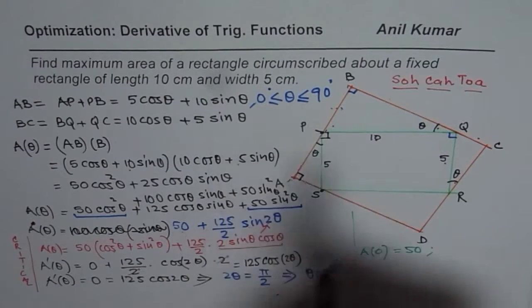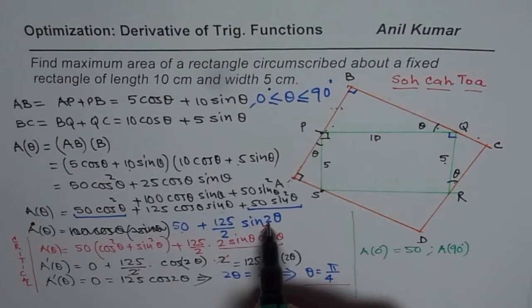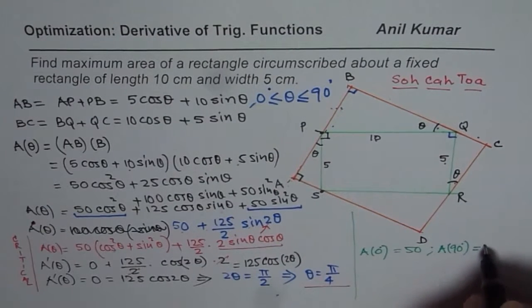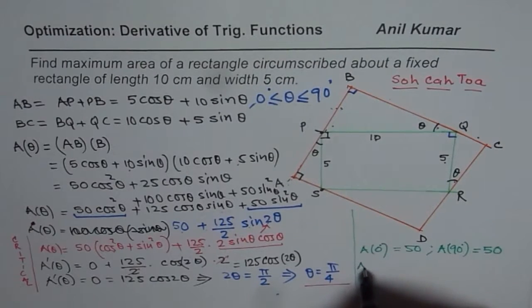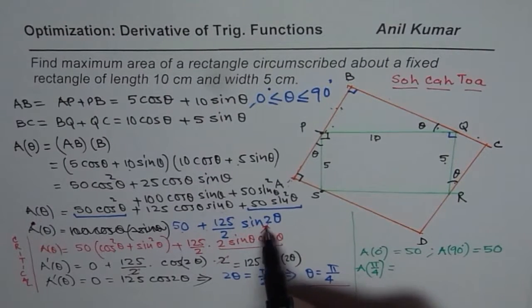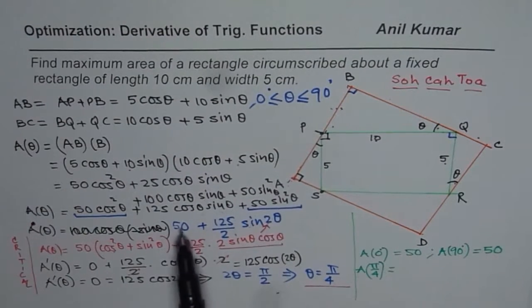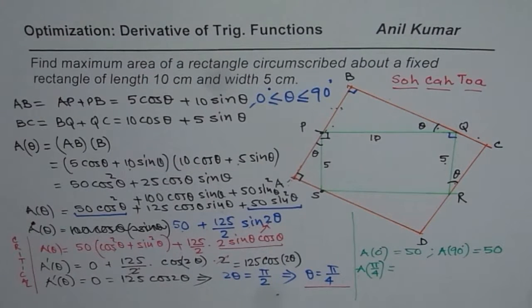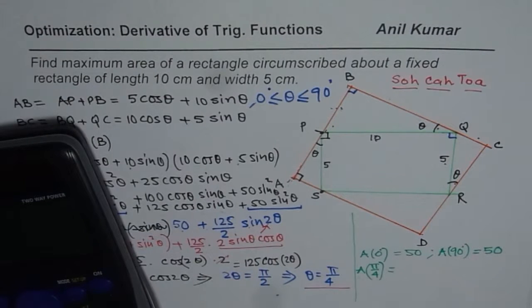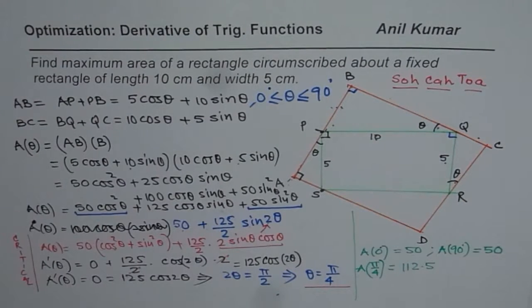Similarly, A(90 degrees): 2 times 90 is 180, and sine of 180 is 0, so A(90) also equals 50. Now for theta equals pi over 4: pi over 4 times 2 is pi over 2, and sine of pi over 2 is 1. So we get A(pi/4) equals 50 plus 125 over 2, which equals 112.5. That is more than 50, so this is the maximum area.